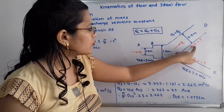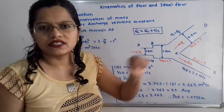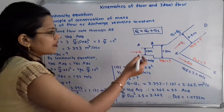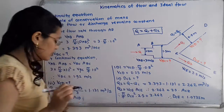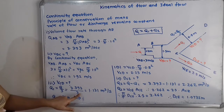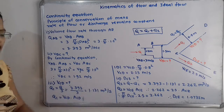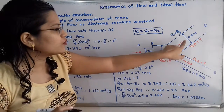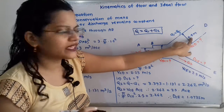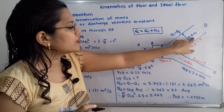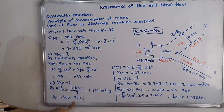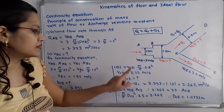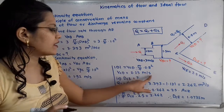The third question is to find the velocity in branch CD. Since Q1 equals Q by 3, we get Q1 equals 3.393 divided by 3, which equals 1.131 meter cube per second. Then using Q1 equals V_CD times A_CD, where A_CD equals pi by 4 times 0.8 squared, we solve for V_CD, which equals 2.25 meter per second.